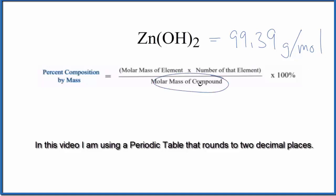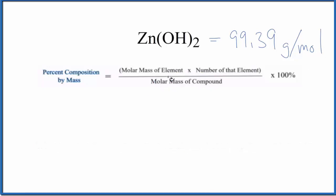Now we just put the molar mass for each element and multiply it by the number of that element, then divide by the molar mass of the compound. So for zinc...